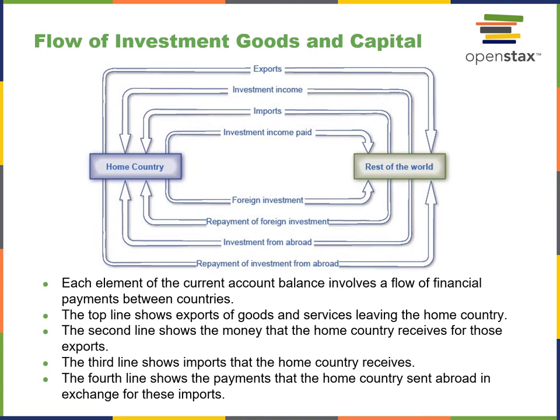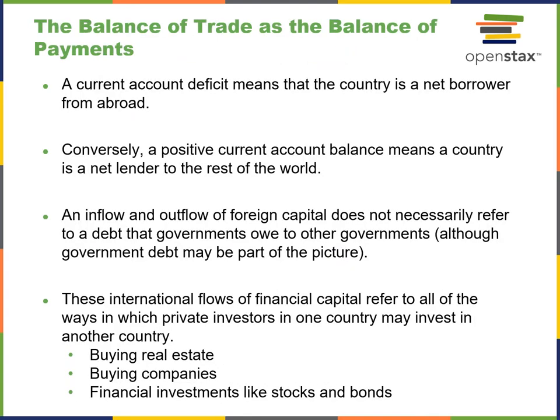Here we have a cyclical graph showing exports, investments, imports, and investment income paid — illustrating the home country in relationship to the rest of the world and global trade. Each element of the current account balance involves a flow of payment between countries. The top line shows exports of goods and services leaving the home country. The second line shows money received for those exports. The third shows imports received from others, and the last shows payments the home country sent abroad. Ultimately, the balance of trade is the balance of payments.